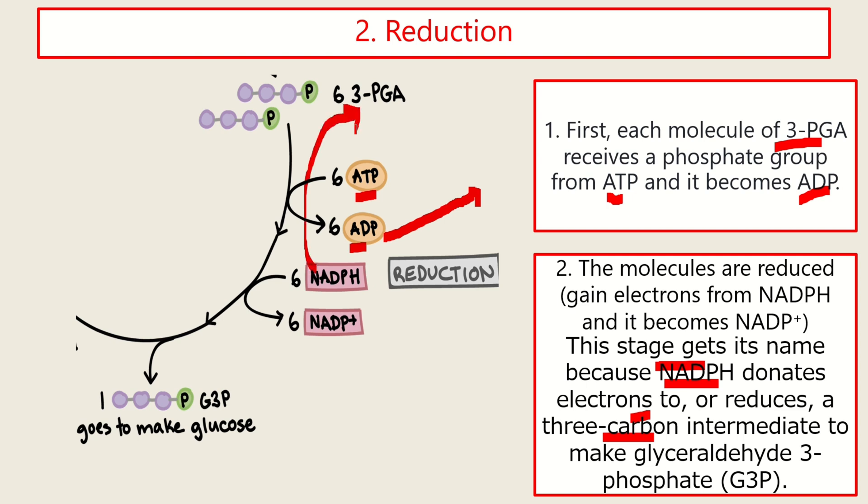And while releasing the electrons, hydrogen atom is lost. Converting the 3-PGA into glyceraldehyde 3-phosphate or G3P. And then the NADPH, like the ADP, will go back to the light reaction.